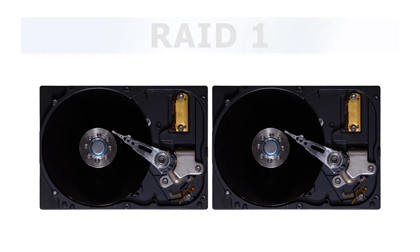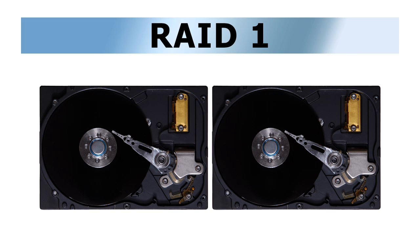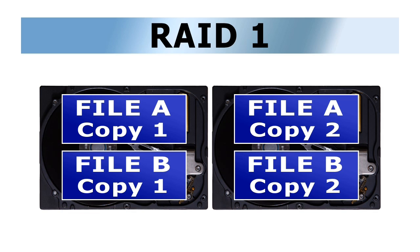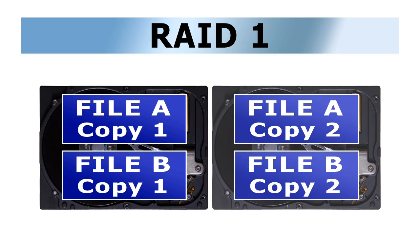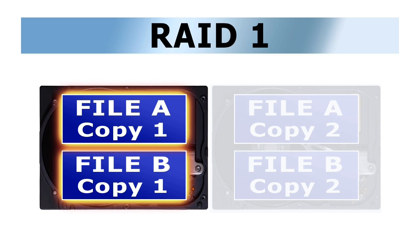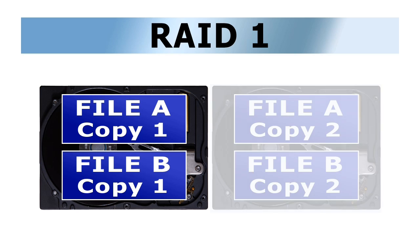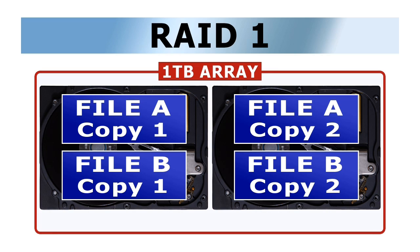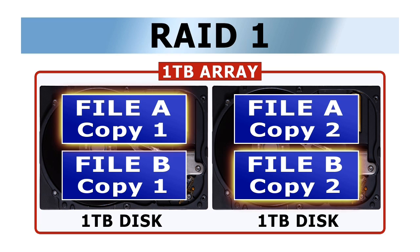In contrast to RAID 0, RAID 1 is primarily intended to protect data against hardware failure. Here data is duplicated or mirrored across two or more disks. The data redundancy so created means that if one physical drive fails, there is still a complete copy of its contents on another drive. However, this does mean that drive capacity is sacrificed. For example, a 1TB RAID 1 volume requires two 1TB disks. While data write performance is not improved by using RAID 1, data read times are increased as multiple files can be accessed simultaneously from different physical disks.